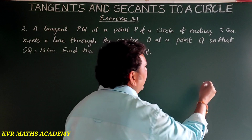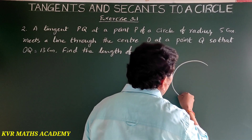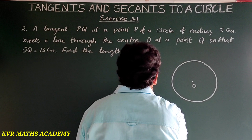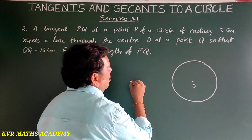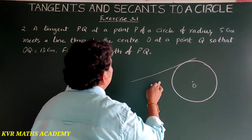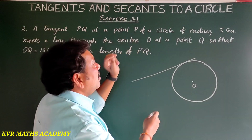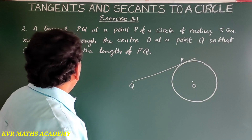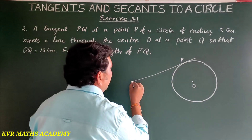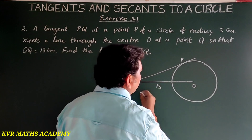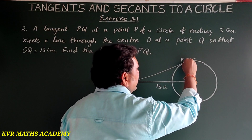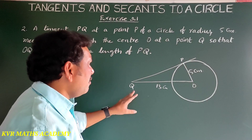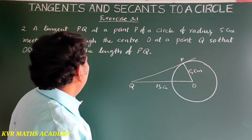According to the problem, first draw the diagram. O is the center of the circle. PQ is the tangent at point P of the circle, and Q is the other end. OQ is equal to 13 centimeters as given, and the radius OP is equal to 5 centimeters. We have to find the length of PQ.